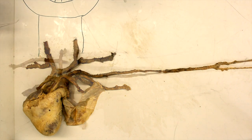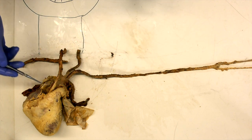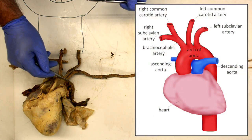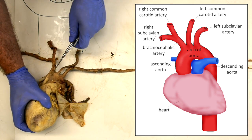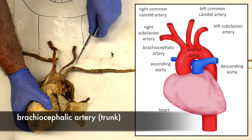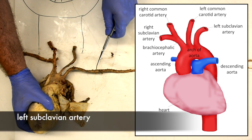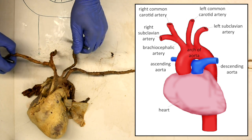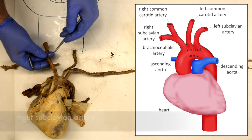Now we are going to take a look at the arteries. We can see the arteries that are leaving the heart. The main artery is the aorta, which has the arch of the aorta visible here. There are three vessels that branch off the arch of the aorta: the first is the brachiocephalic trunk, the second is the left common carotid, and the third is the left subclavian.